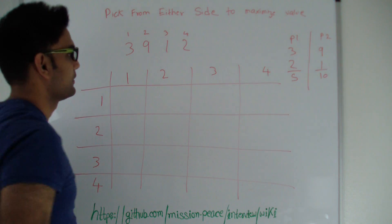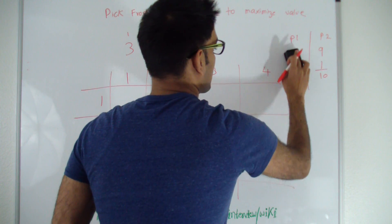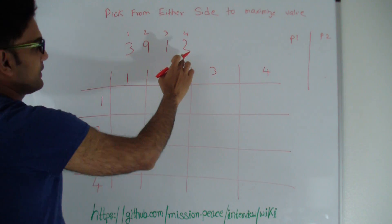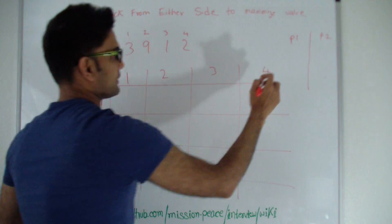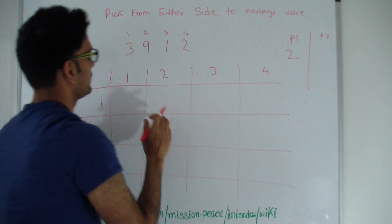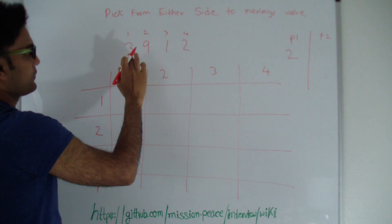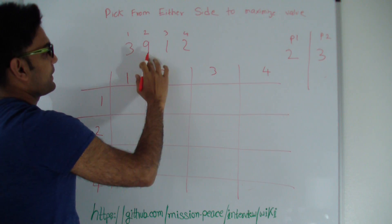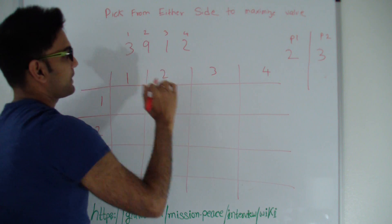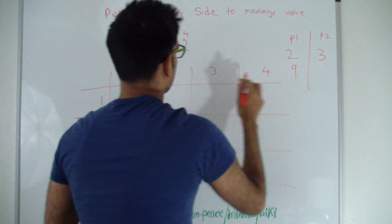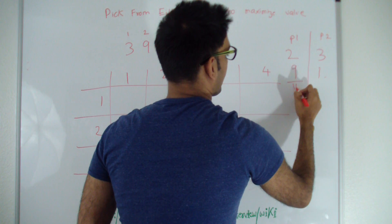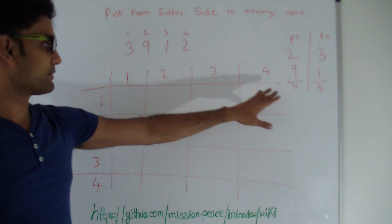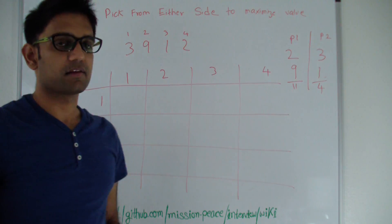So the total I make is 5 and the total player 2 makes is 10. Let's see if I can do better. Suppose I went ahead and picked 2 initially, so I get 2. Player 2 is left with 3, 9, and 1, so player 2 picks 3. Then I'm left with 9 and 1, so I pick 9. Player 2 picks 1. You can clearly see that this gives me a better value than before.